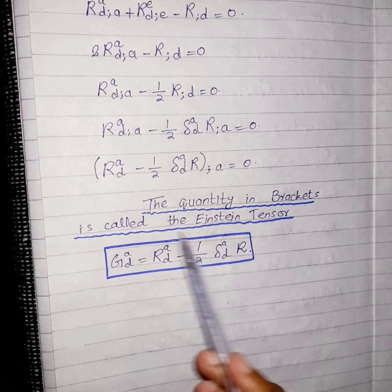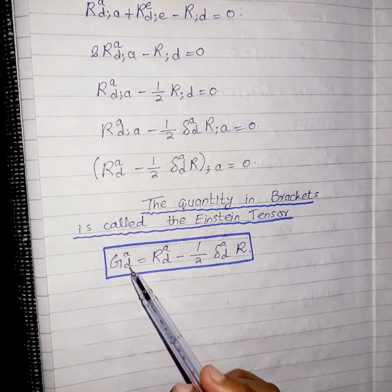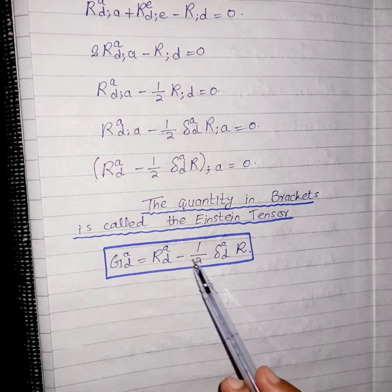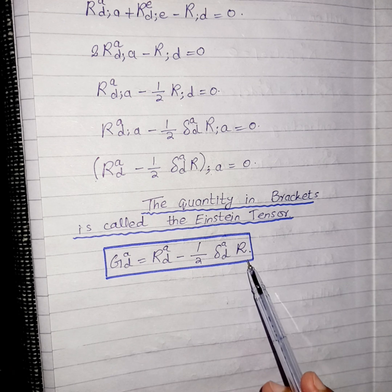Now students, the quantity in brackets is actually called the Einstein tensor and we can write it as G_ad is equal to R_ad minus 1 by 2 delta_ad R where R is a Ricci scalar.